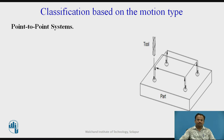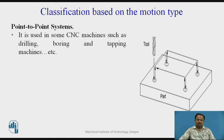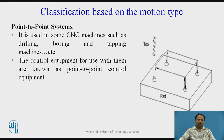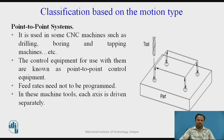Classification based on the motion type. The first one is the point to point system. It is used in CNC machines such as drilling, boring and tapping machines, where the spindle is always vertical, sometimes horizontal to the component, or sometimes at an angle. The control equipment for use with them are known as point to point control equipment. Feed rates need not be programmed. In these machine tools, each axis is driven separately because once the drill bit is inserted into the object, it is lifted up and moved separately to another position. Likewise, different holes can be prepared with the help of this point to point system.